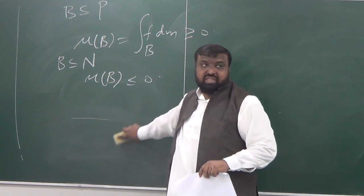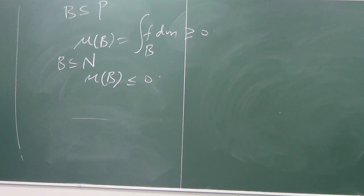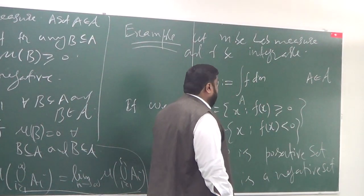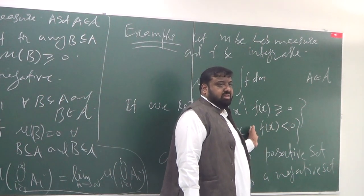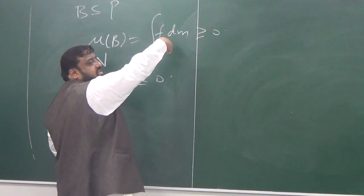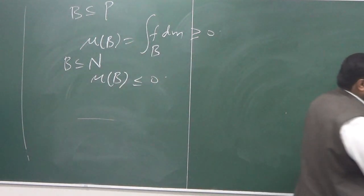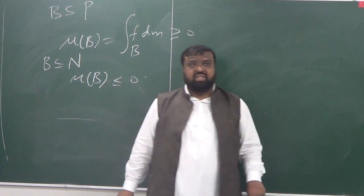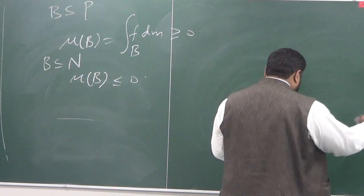If you wish, you can also define a third set C as the collection of points x where F(x) = 0. Then C must be a null set, because integrating over any subset of C gives zero. And by our definition, a null set means every measurable part of it has measure assigned zero.